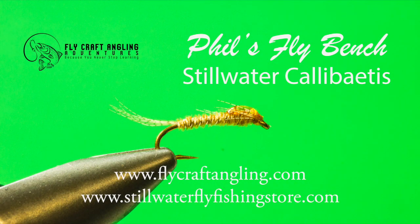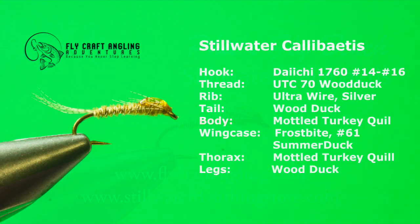When fish are focused on callibaetis nymphs, you need a pattern that ticks off a set of important traits: slender tapered body, a sparse set of tails and legs coupled with a darkened wing case and a touch of flash to suggest the shine of the emergence gases of a mature, ready to hatch callibaetis nymph. My Stillwater Callibaetis targets these key traits, producing quality trout on many occasions. Here are the materials you will need to place an assortment of Stillwater Callibaetis nymphs within your fly box.